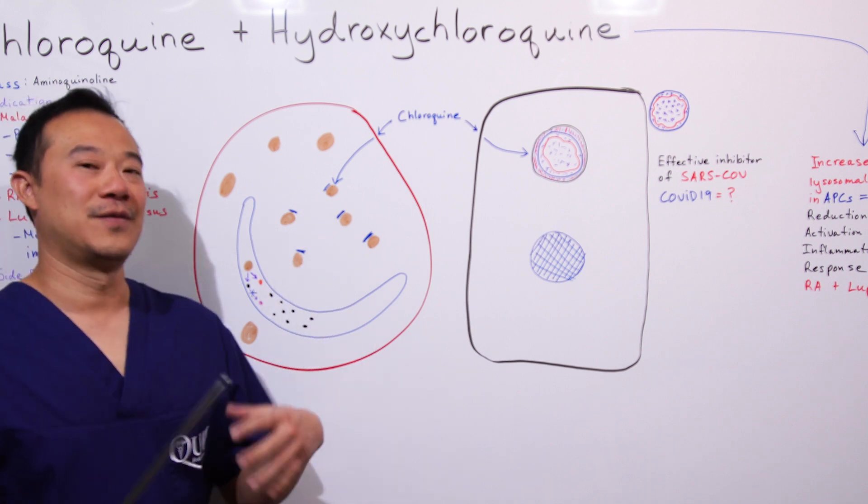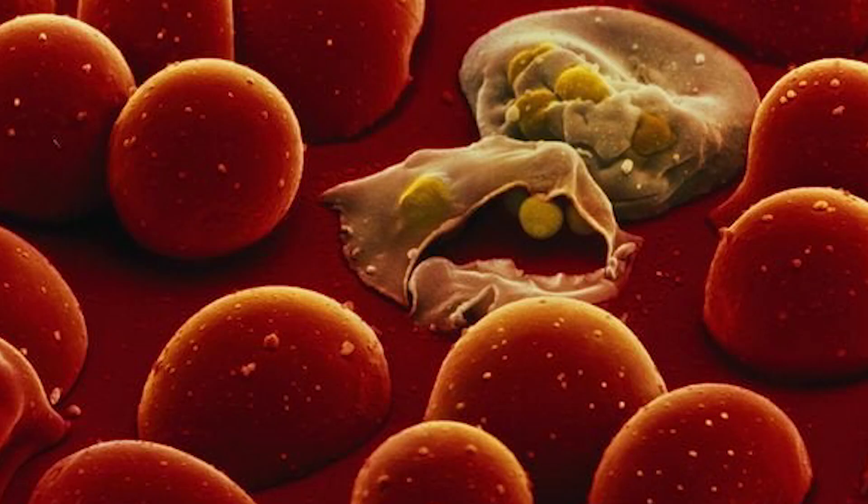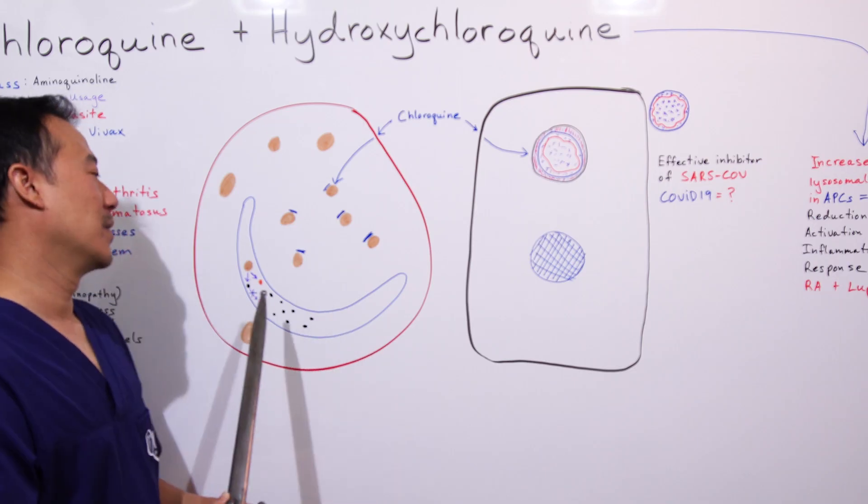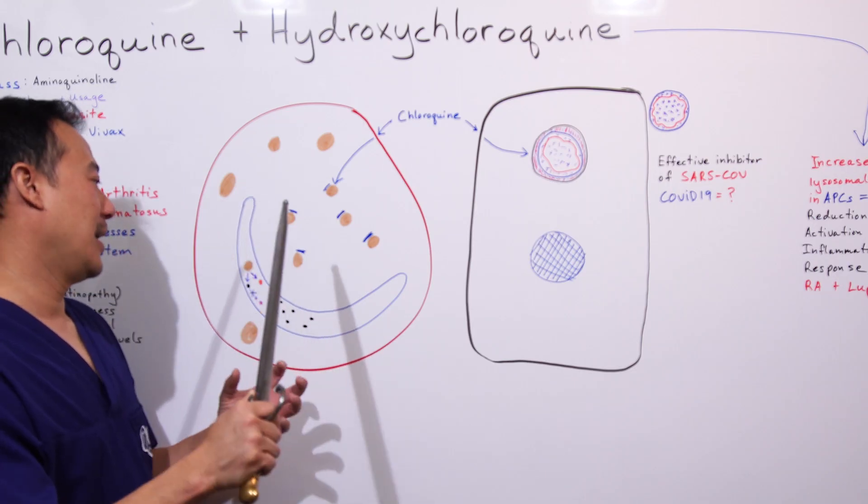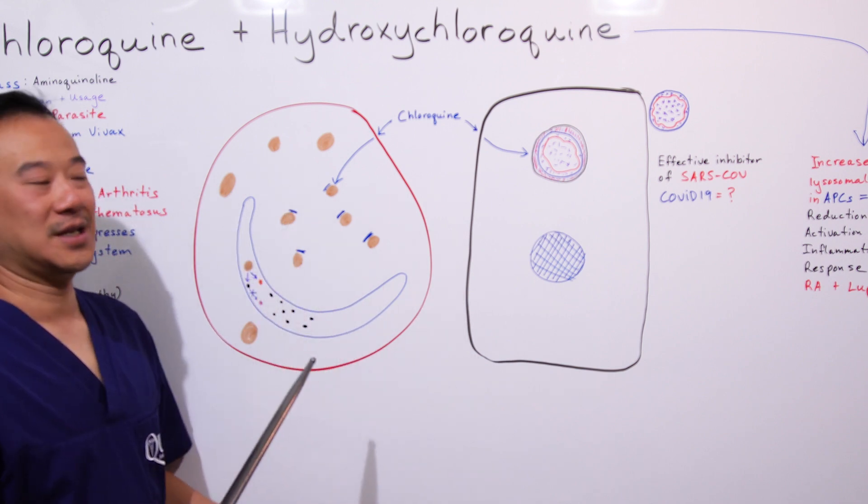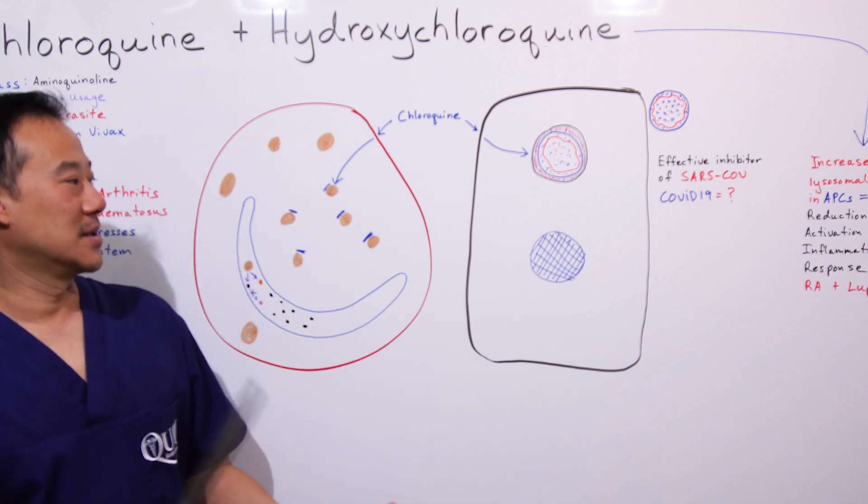This poor parasite is now becoming iron toxic, and this cell is becoming membrane damaged. The red blood cell dies, encasing the parasite that's poisoned with the iron, and it gets auto-digested. Everything dies within the cell. So that's what happens to the malaria parasite in the red blood cell with chloroquine.